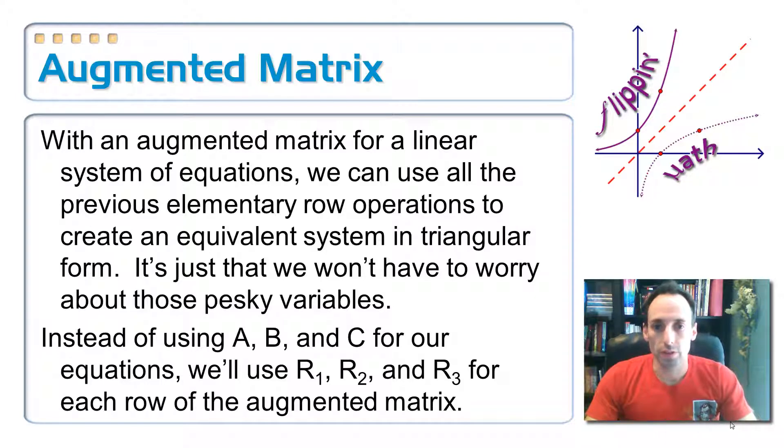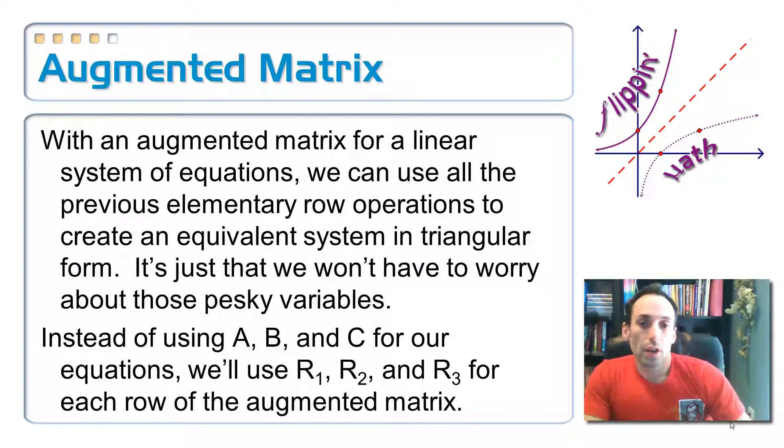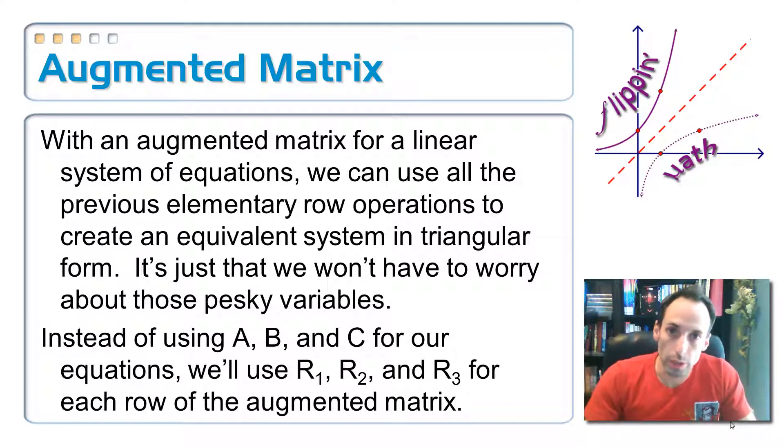The only difference is, we didn't have to worry about the variables, which is nice, we just have to look at the numbers. And the other thing is, instead of calling it A, B, and C for the equations, we're going to call it R1, R2, and R3 for row 1, row 2, and row 3.